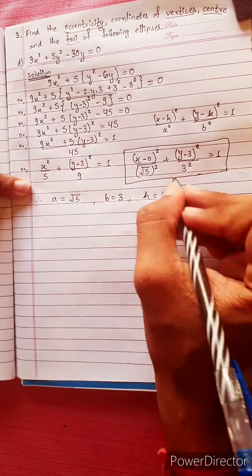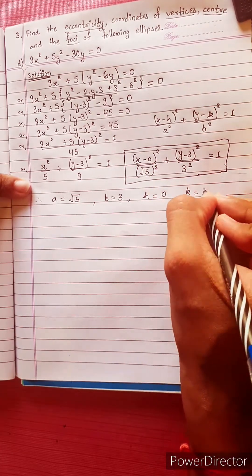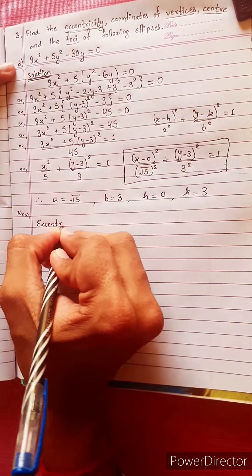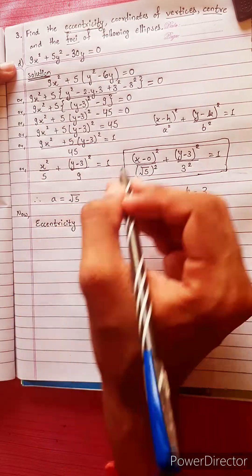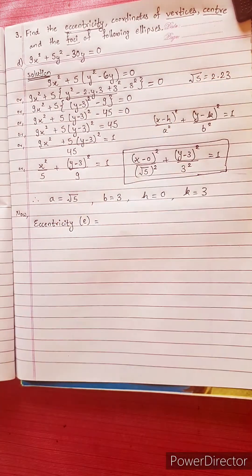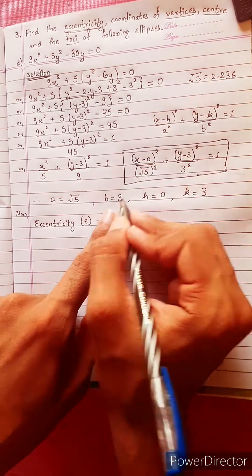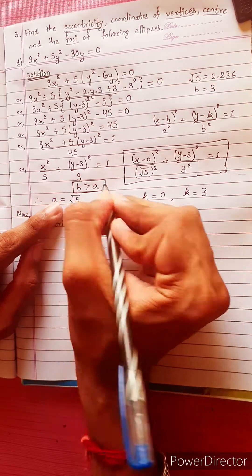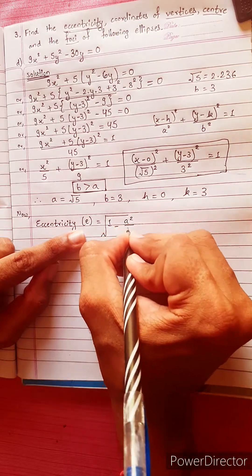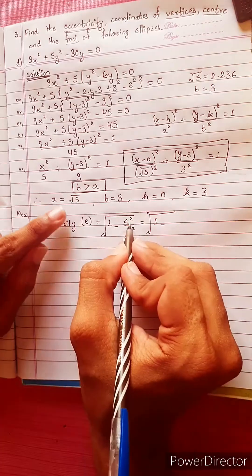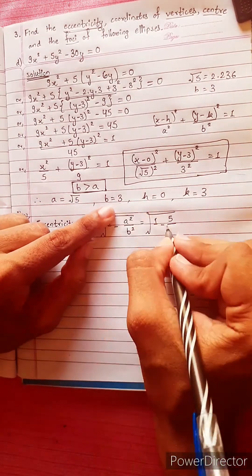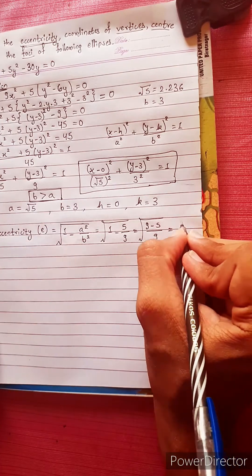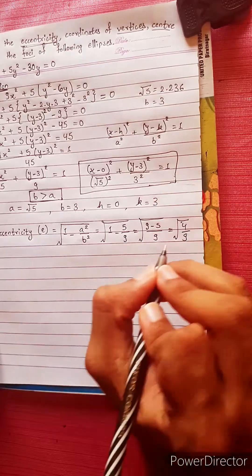From the standard form, h equals 0 and k equals 3, so the center is (0, 3). Since b is greater than a, the eccentricity formula is e equals under root of 1 minus a squared by b squared, which gives under root of (9 minus 5) divided by 9, equals 2 by 3.